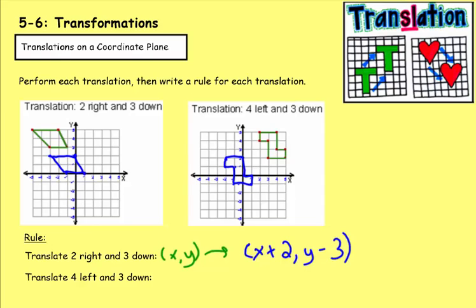Now let's look at the rule for this translation. What happened to our x and y values? By moving four to the left, positive two became negative two, positive five became positive one, positive four became zero — we're subtracting four each time. So x becomes x minus four. For y, moving three down means two becomes negative one and five becomes positive two, so y becomes y minus three.